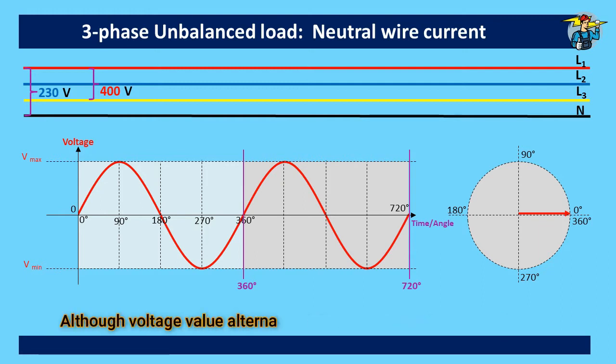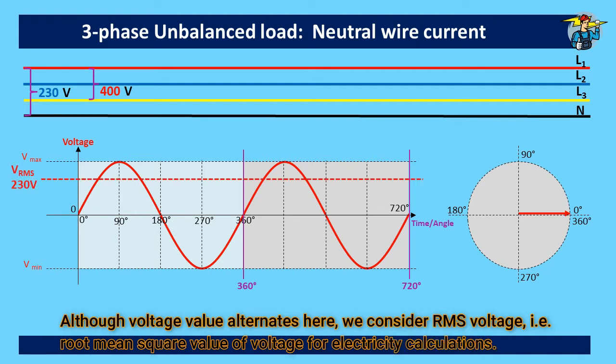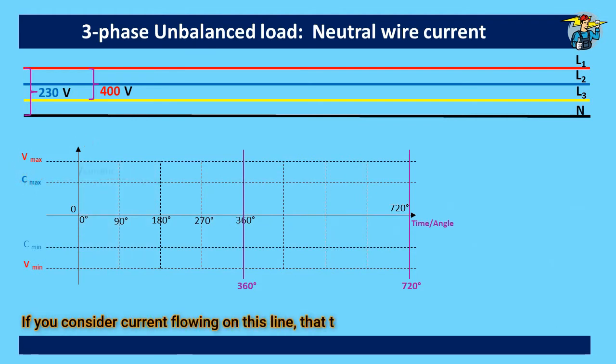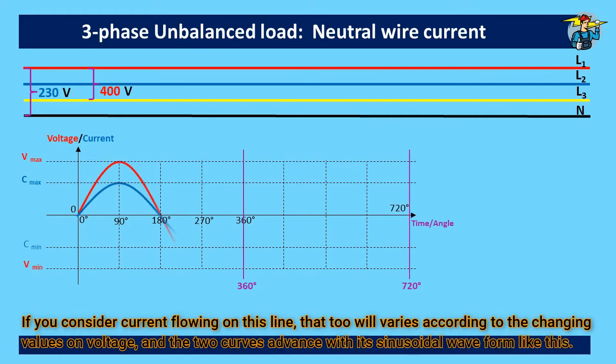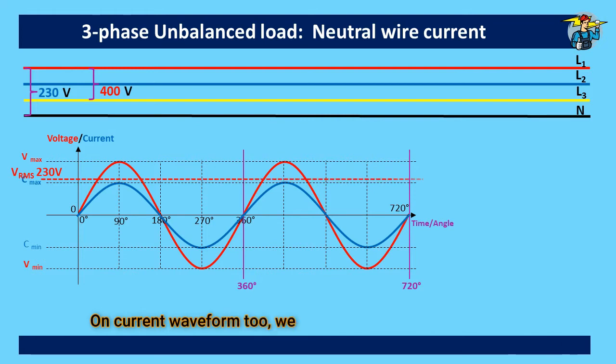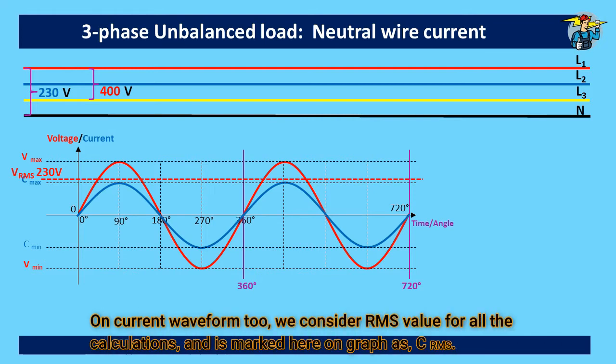Although voltage value alternates here, we consider RMS voltage, that is root mean square value of voltage for electricity calculations. If you consider current flowing on this line, that too will vary according to the changing values on voltage, and the two curves advance with its sinusoidal waveform like this. On current waveform too, we consider RMS value for all the calculations, and is marked here on graph as I RMS.